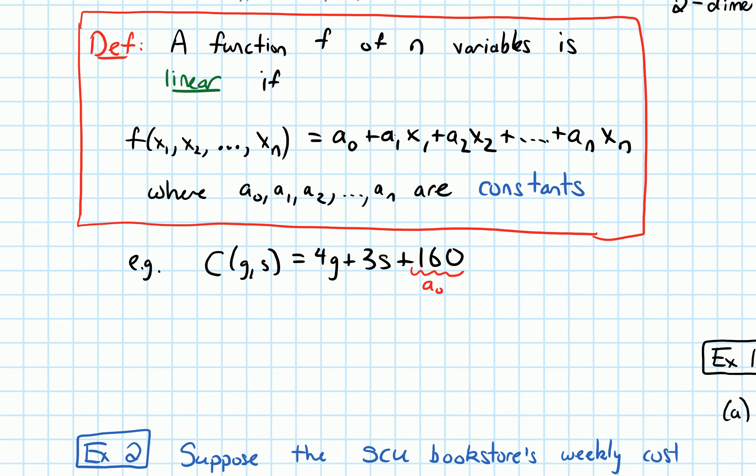So notice the similarity between a linear function like this and linear functions of a single variable. Those were things like f of x equals 3x plus 7. That was a linear function of one variable. I could also think of this as y equals 3x plus 7. And we definitely know that's the equation of a line.